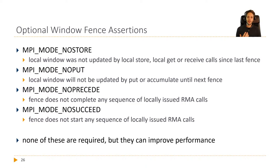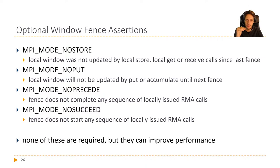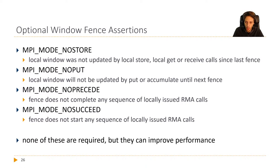For further improvements: since window fences are collective operations and collective operations are expensive, you can tell MPI more about the semantics using fence assertions. There are four: MPI_MODE_NO_STORE — the local window was not updated by a local store or receive since the last fence; MPI_MODE_NO_PUT — the window will not be updated by a put or accumulate until the next fence; MPI_MODE_NO_PRECEDE — this fence doesn't complete any locally issued RMA calls; and MPI_MODE_NO_SUCCEED — no RMA operations will follow this fence.